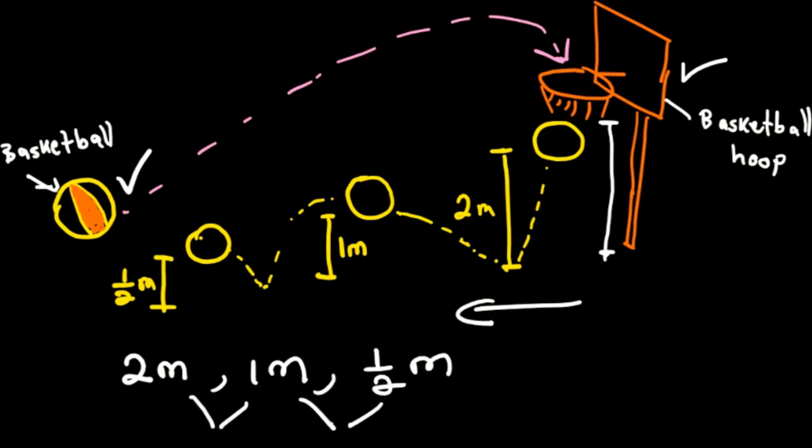To identify the ratio format, we label the heights as T1, T2, and T3. T1 equals 2 meters, T2 equals 1 meter, and T3 equals 1/2 meter.